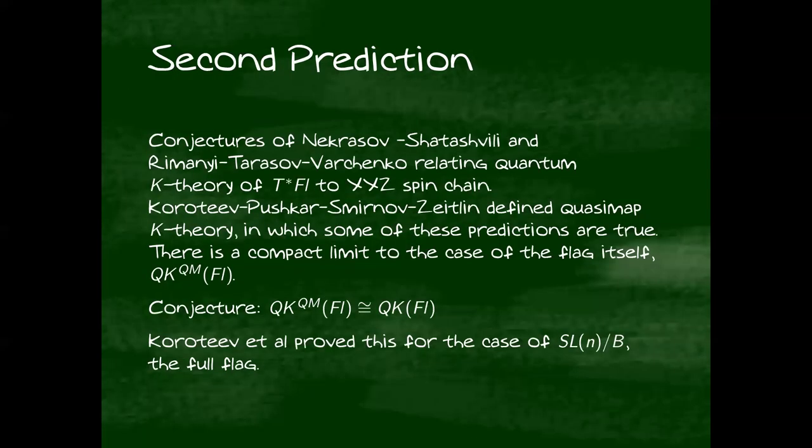Okay. There's one more prediction. This comes from representation theory and quantum integrable systems. There are some very general conjectures regarding Nakajima quiver varieties that specialize to relating the K-theory of the cotangent bundles of the flags to a quantum integrable system called the XXZ spin chain. Certain authors, Koroteev, Pushkar, Smirnov, and Zeitlin, have answered some of these conjectures with the caveat that they're not using stable map quantum K-theory. They've defined a version of quasi-map quantum K-theory where some of these connections are shown to hold.